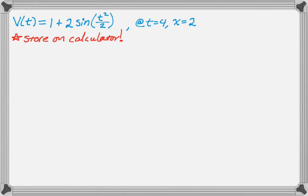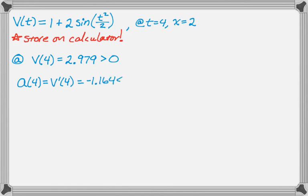Okay, so for this question we're asked, at t equals 4 is a particle speeding up or slowing down? To know that, we would need to know the sign of velocity and acceleration. So let's use our calculator to find velocity and acceleration. So my calculator tells me that v of 4 is 2.979, which is obviously greater than 0. And it tells me that a of 4, which is v prime of 4, so that's the work that I would show. You don't actually show very much work because it's a calculator problem. It's negative 1.164, which is definitely less than 0.